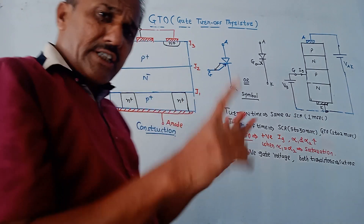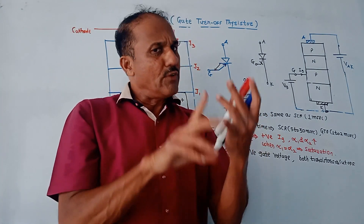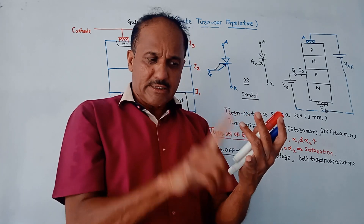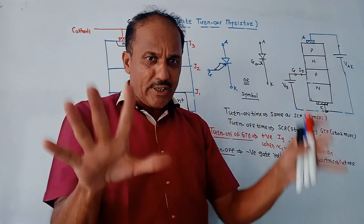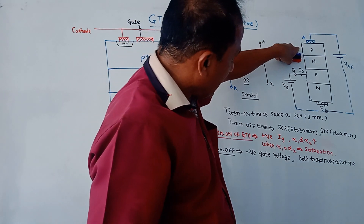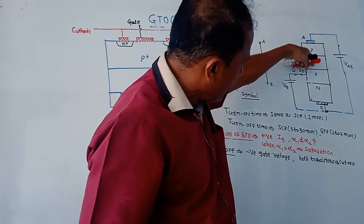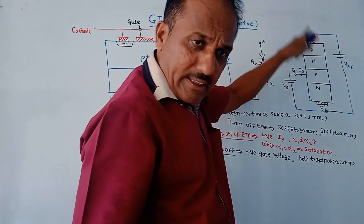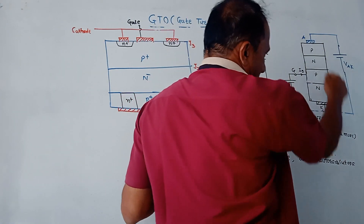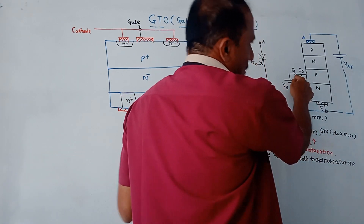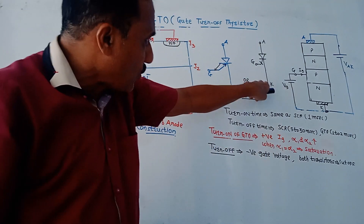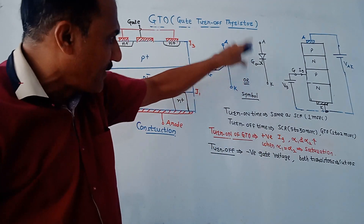The construction of GTO is very much similar to that of SCR. In case of SCR, there are three terminals: anode, cathode, and gate, and there are four layers P-N-P-N. Similarly, GTO also consists of four layers P-N-P-N and has three terminals: anode A, cathode K, and gate G, as shown in the diagram. These two diagrams represent the symbols of the GTO.